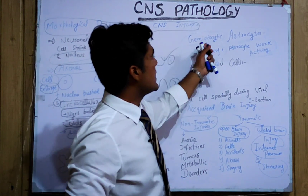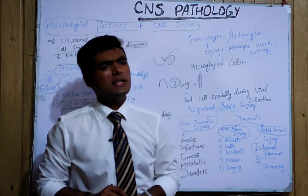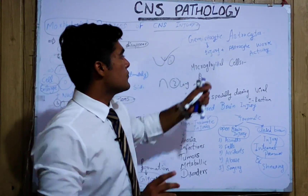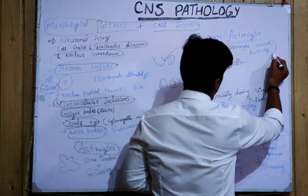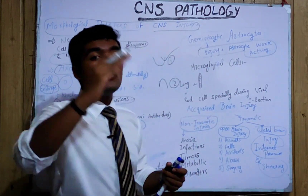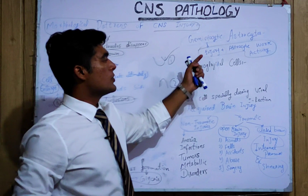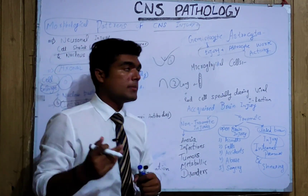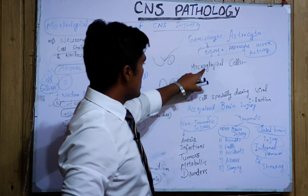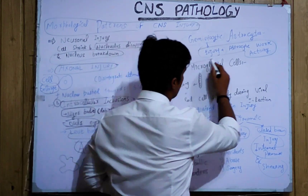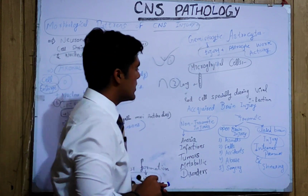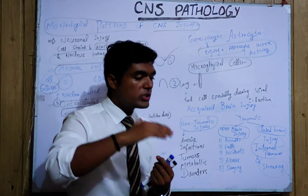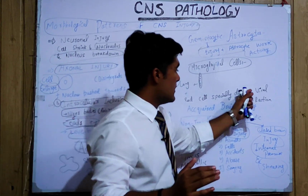Second is the gemistocytic astrocyte. When we study it histologically, its basic role is in injury and astrocyte work activity — it promotes that activity. So it also plays a role in repairing cell damage. Then we have the microglial cell. In CNS, we have a rod-shaped cell which we call microglial, mostly involved in case of viral infection.